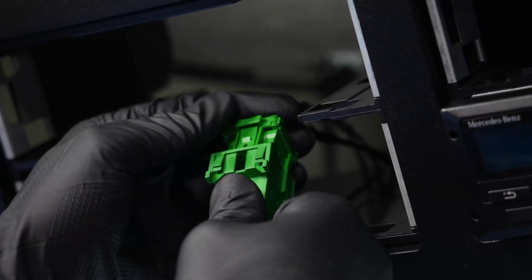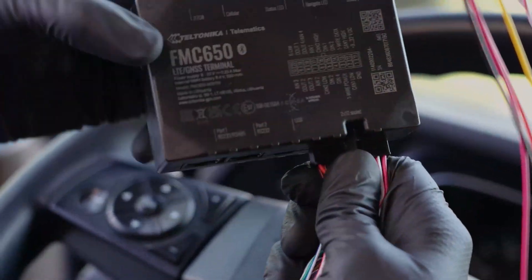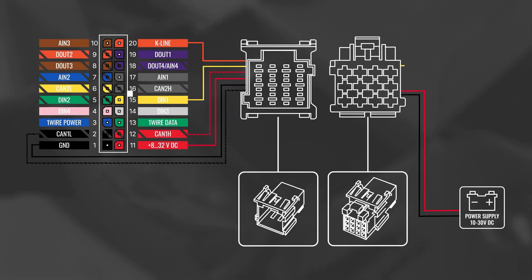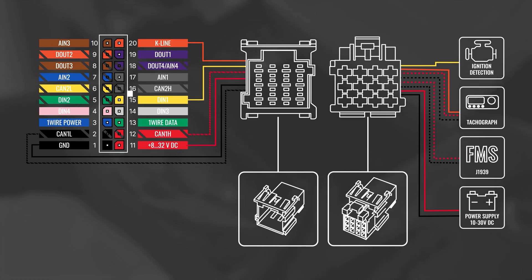Simply plug it into the vehicle's FMS port and connect the 20-pin connector to the tracker. The FMS connector includes a power supply, an ignition wire, CAN wires for the vehicle's FMS data and tachograph digital file data, as well as a K-Line signal wire for tachograph live data. Please note that the K-Line wire may not be available depending on the vehicle's make and model. In such case, we recommend routing the K-Line signal wire to the tachograph's D connector.